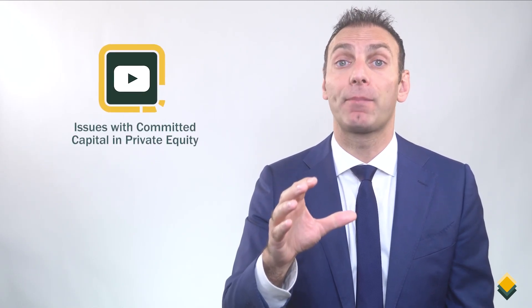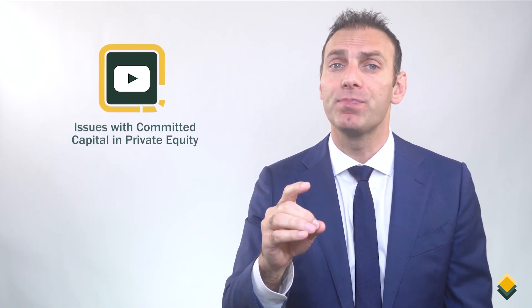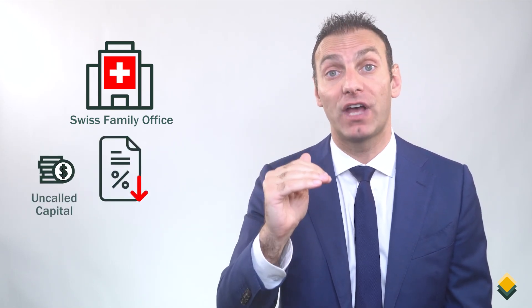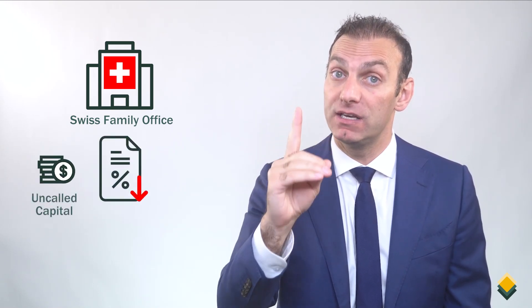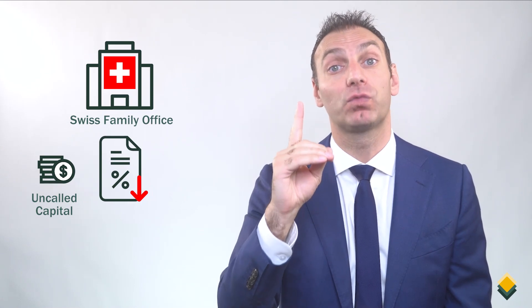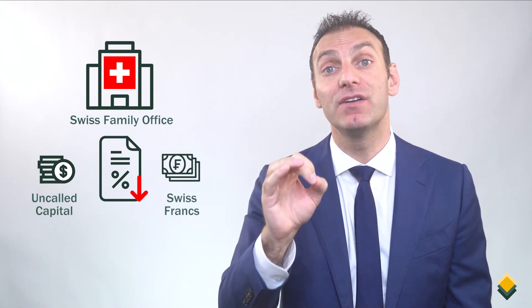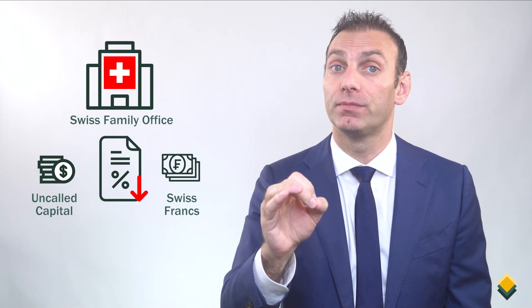In our video titled Issues with Committed Capital and Private Equity, we went into detail about an example from before the pandemic of a Swiss family office that was earning negative interest rates on its uncalled capital, since it wanted to keep its money in Swiss francs and needed to keep its money available to be called.